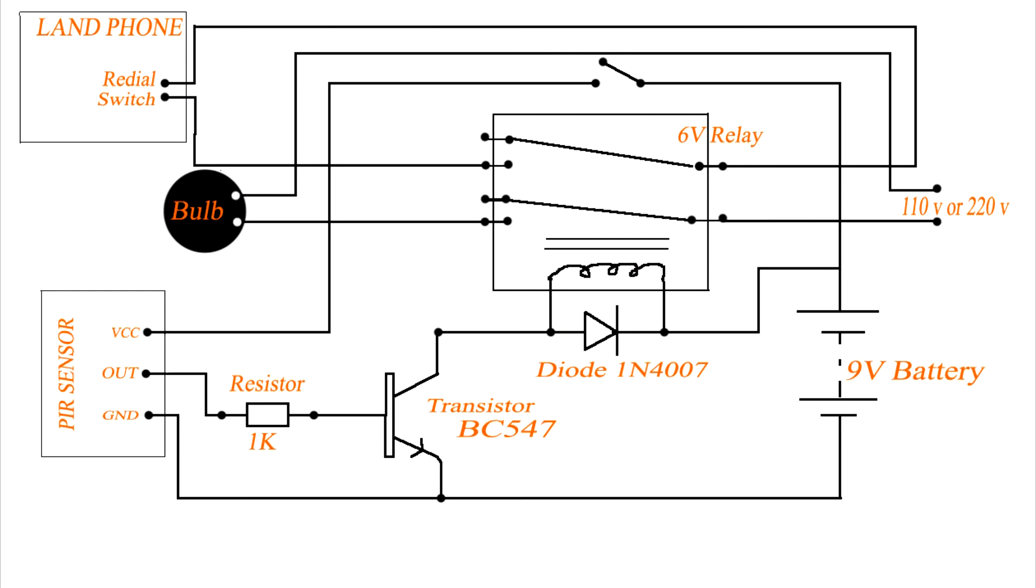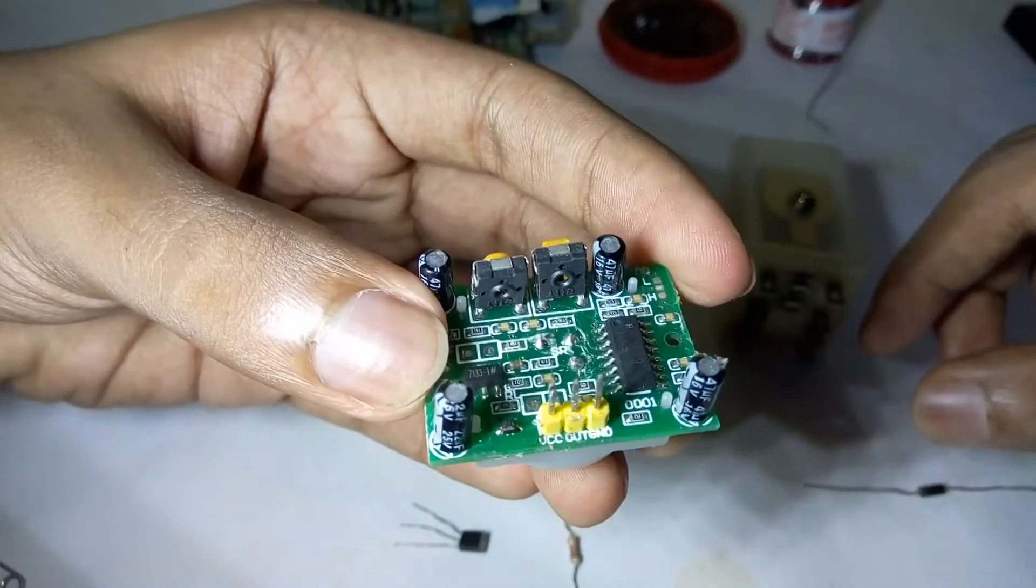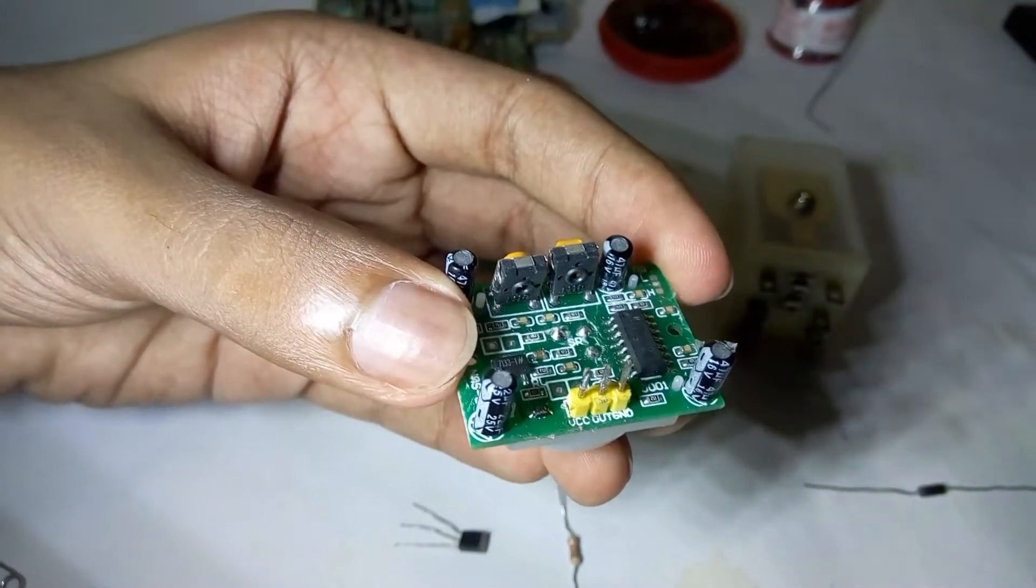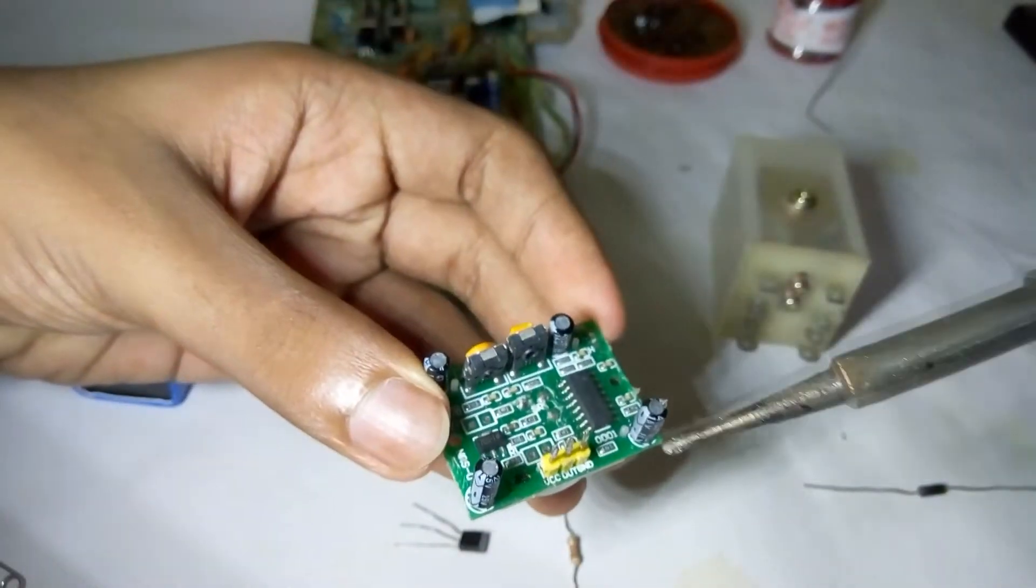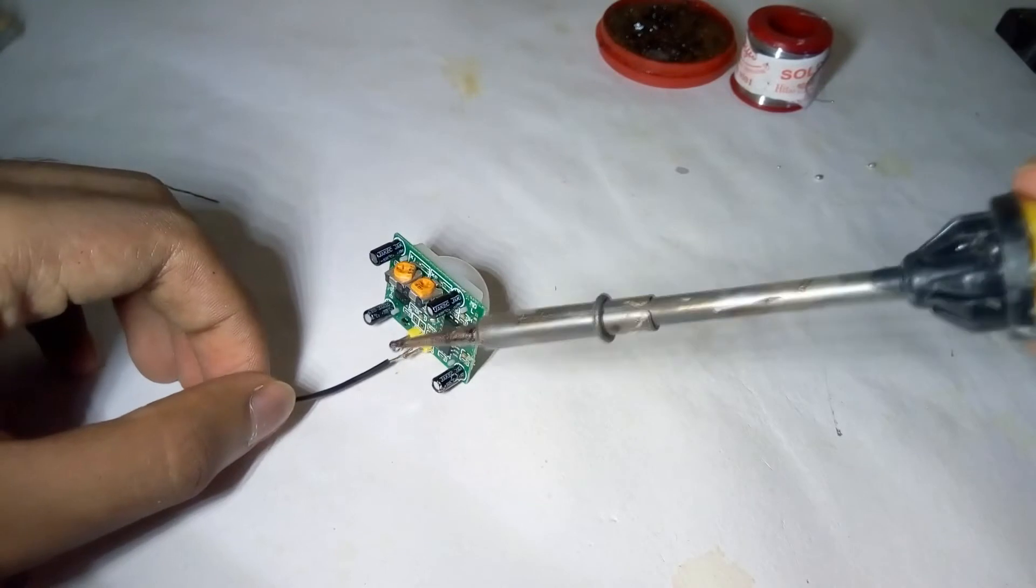Let's see how to make this circuit. This is a PIR sensor, passive infrared sensor. It has three pins: ground, out, and VCC. I'm going to use black color for ground, yellow color for out, and red for VCC, the positive terminal.